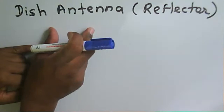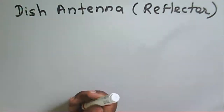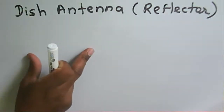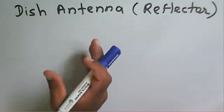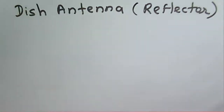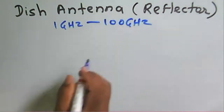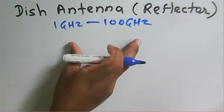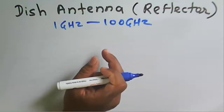This antenna works at microwave frequency. If you use a low frequency, that particular signal will not be reflected by the metallic object. But if you consider a microwave frequency signal, then that microwave frequency signal will be reflected by this structure. That is one of the characteristics of microwaves — microwaves act as a reflector when they come across a metallic body or metallic structure. This particular antenna works in the frequency range of 1 GHz to 300 GHz, and this antenna can be used as a transmitting antenna as well as a receiver antenna at microwave frequency.